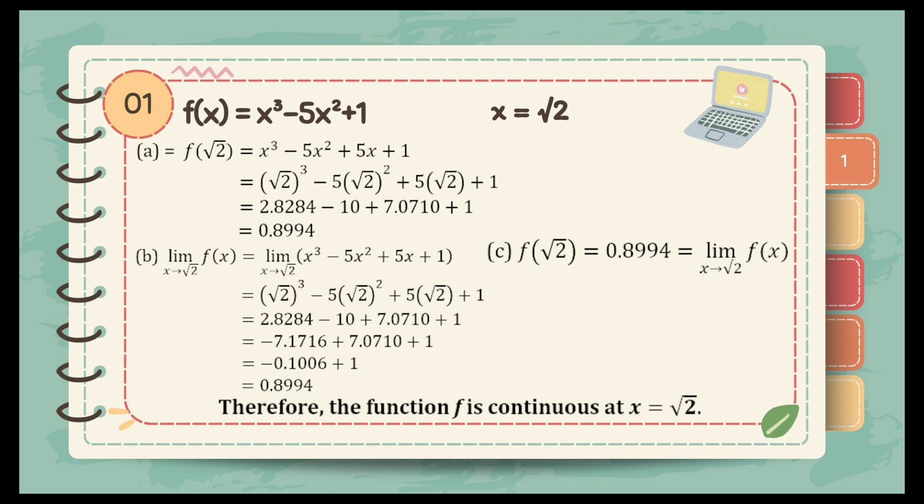For letter B, to determine the limit of the function, we can just do the direct substitution of the square root of 2. Hence, we can still get 0.8994 as the limit of the function. For letter C, the first two conditions are equal. Therefore, the function is continuous at x is equal to the square root of 2.